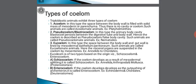Coming to the types of coelome: triploblastic animals exhibit three types. First, acoelomate — the space between the body wall is filled with solid mass of mesoderm or parenchyma, so there is no cavity or coelome. Such animals are called acoelomate animals. Example: Platyhelminthes. Second, pseudocoelome or blastocoelome — the primary body cavity called blastocoel persists between the digestive tube and body wall. Hence it is described as pseudocoelome, also called false body cavity. Such animals are called pseudocoelomate animals. Example: nematodes.